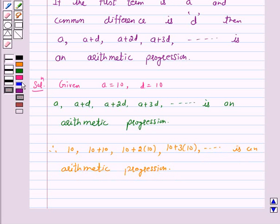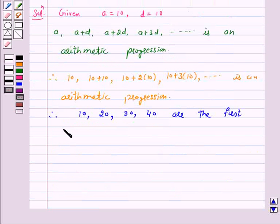In the question, we have to find the first four terms of an AP. Therefore, 10, 20, 30, 40 are the first four terms of the AP.